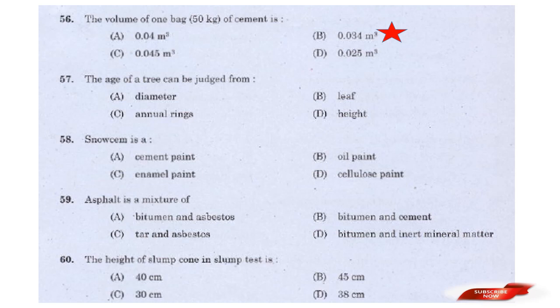Question: The age of a tree can be judged from — options: Diameter, Leaf, Annual rings, Height. Answer: Option C — Annual rings.